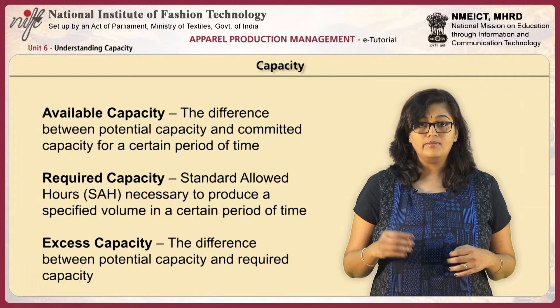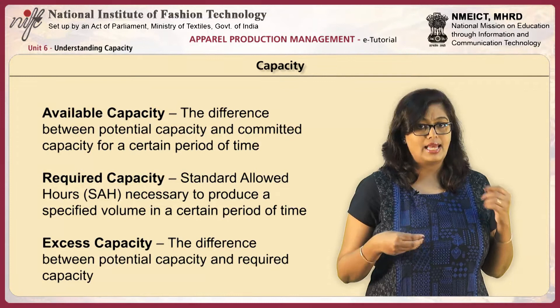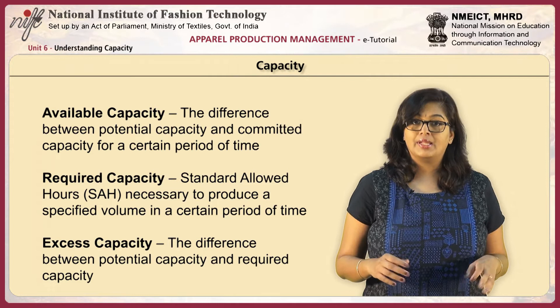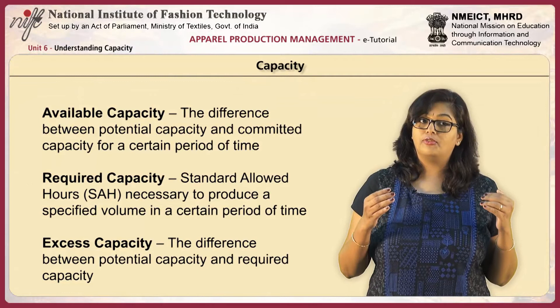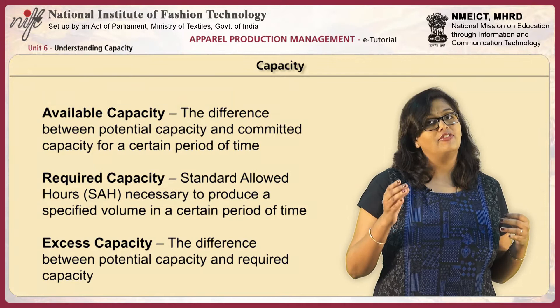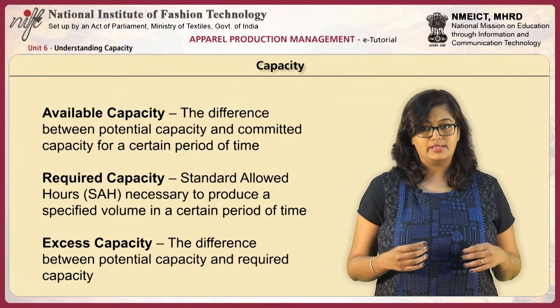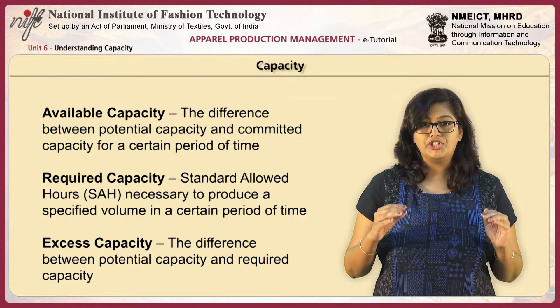Next, required capacity is the standard allowed hours necessary to produce a specific volume in a certain period of time. This basically refers to the time taken for any garment to be produced for a given volume. For example, if we need 500 pieces of style A to be completed, we need to understand what is the required capacity for that style. Finally, excess capacity is the extra capacity that we have — the difference between your potential capacity and your required capacity.